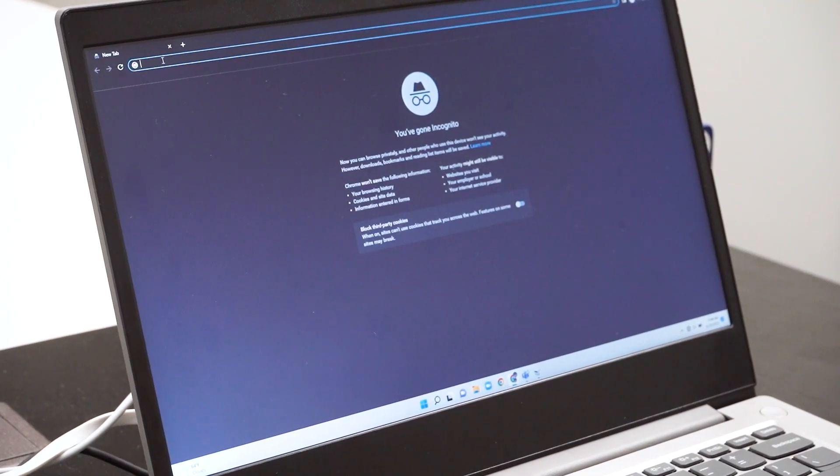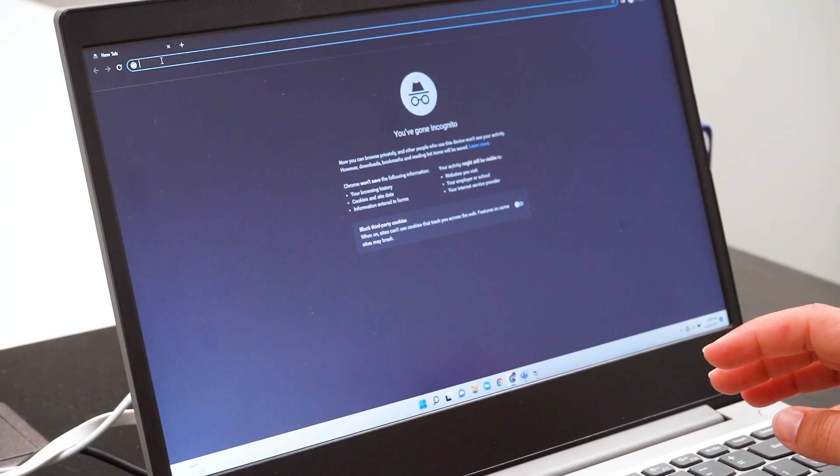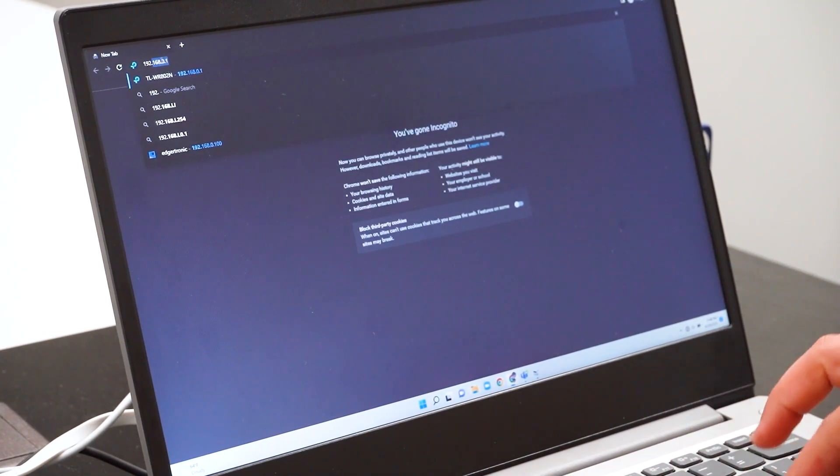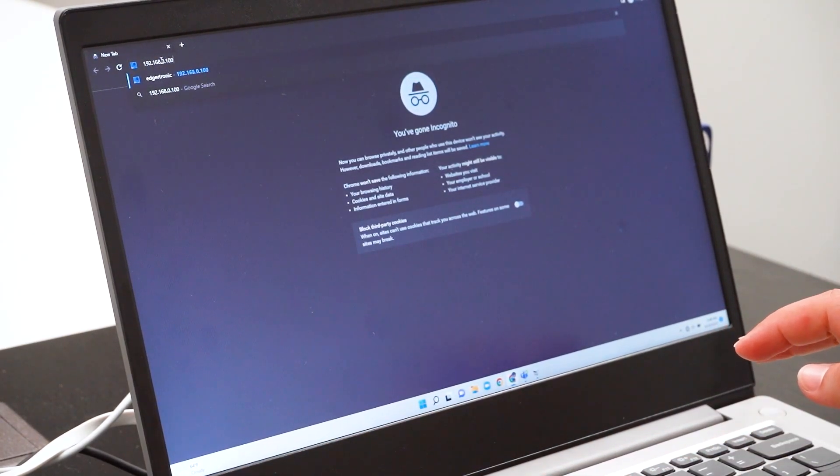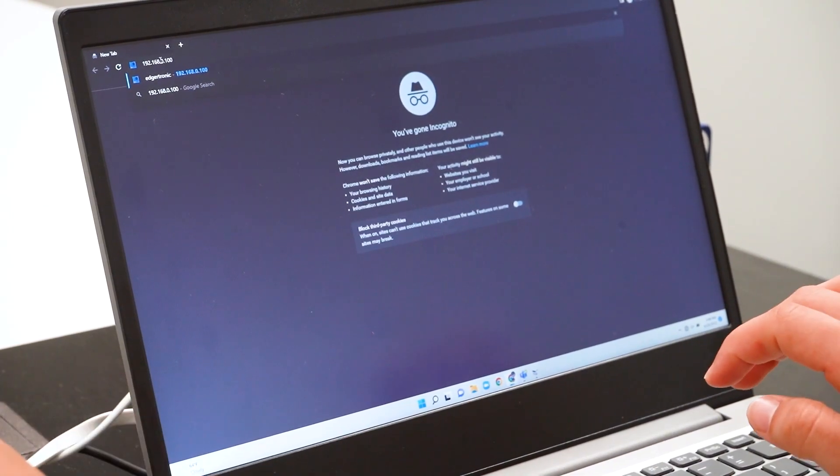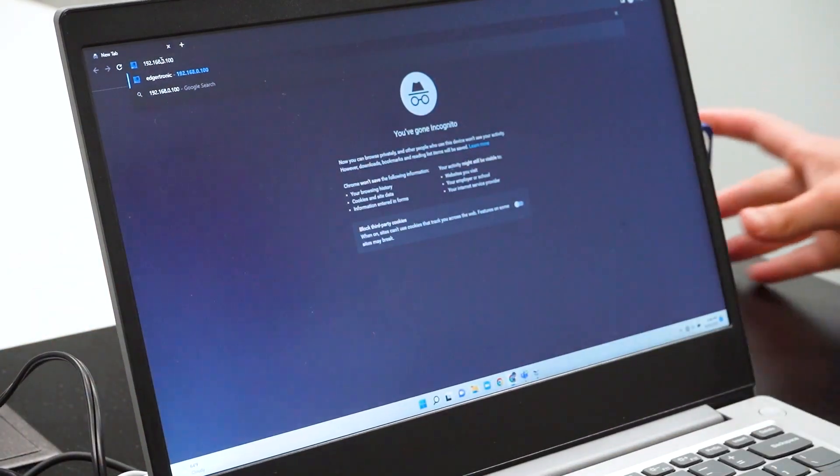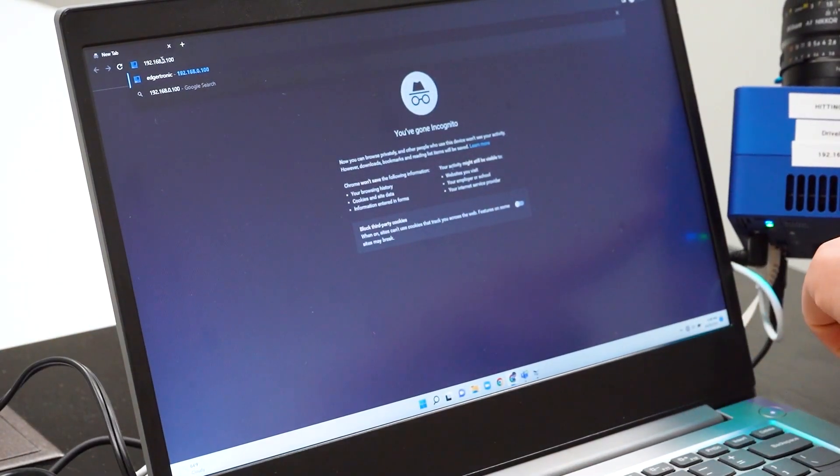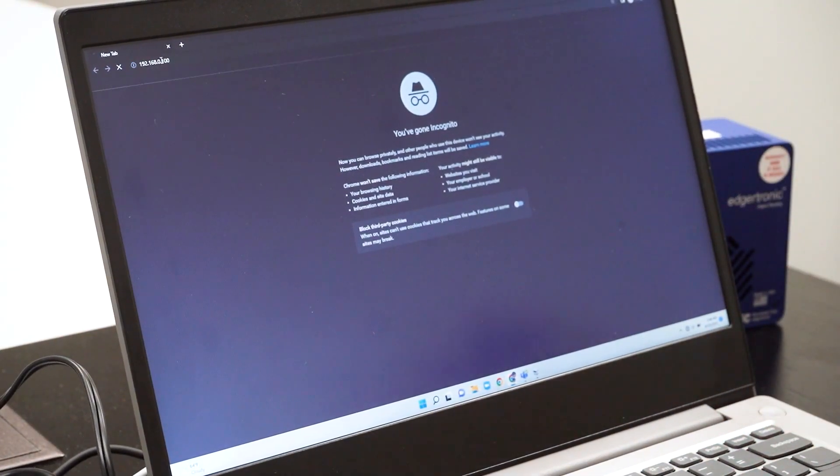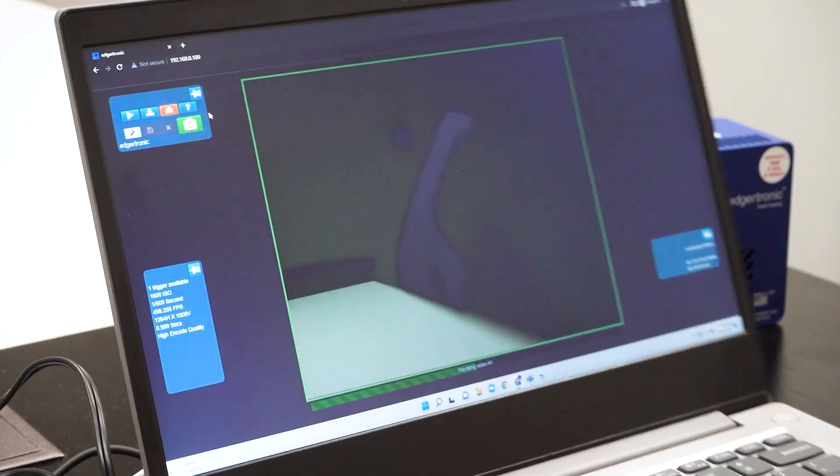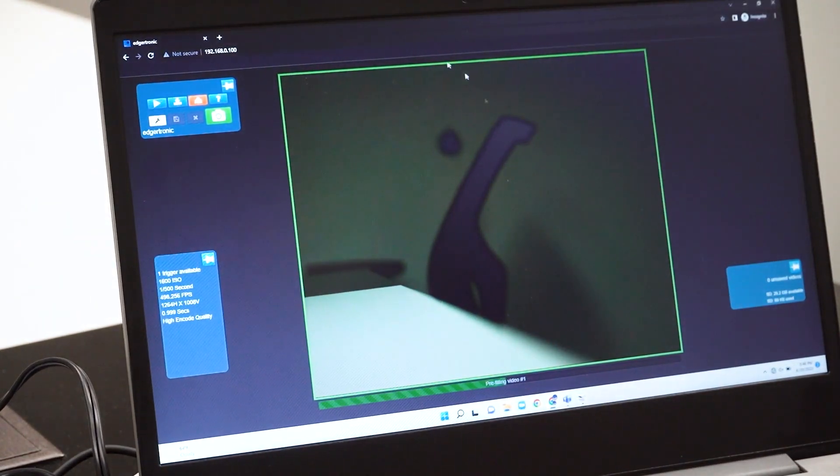Once connected, you're going to type in your IP address. So for us, ours is 192.168.0.100. Now to find your IP address, it's either going to be on your TP-Link underneath here, or it's going to be at the top of your camera. You're going to press enter and it's going to come straight to your home page. So this is your camera's home page and you're ready to get rolling.